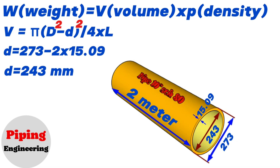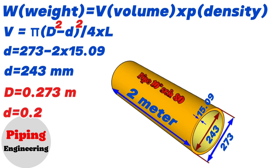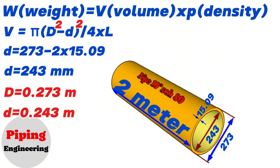These dimensions should be converted to meters because in the density charts of ferrous metals they use meters. So the outside diameter of the 10-inch pipe in our example is 0.273 meters and the inside diameter is 0.243 meters. We also know that the length of the pipe is 2 meters.